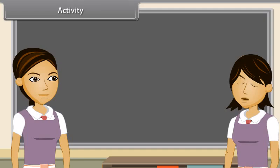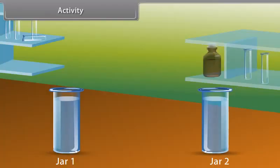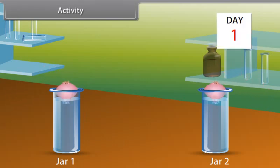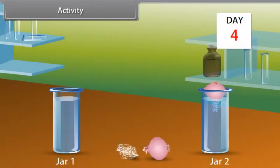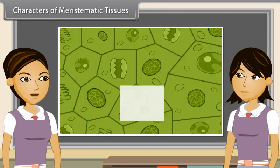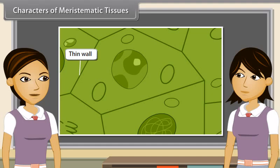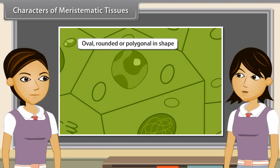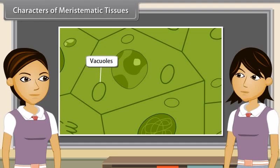We can prove that meristematic tissues are found only in specific regions by doing an activity. Take two glass jars filled with water and place same-sized onion bulbs on each jar for three days to observe root growth. Measure the length of roots on days one, two and three. On the fourth day, cut the roots of one onion bulb and place it back on the jar. On the fifth day, we find that the growth of the cut roots has stopped. This activity proves that growth of plants occurs only in certain specific regions because meristematic tissue is located only at these points.